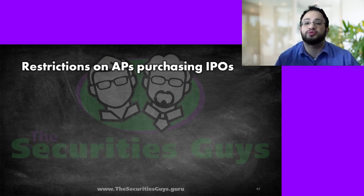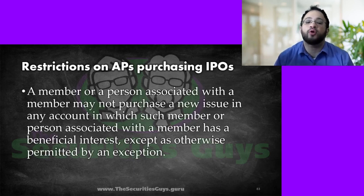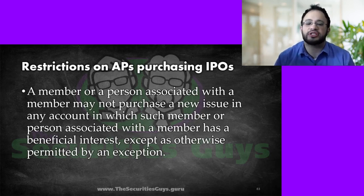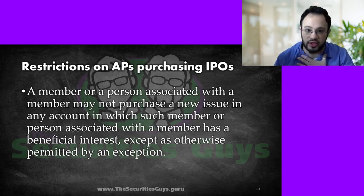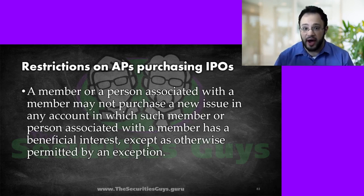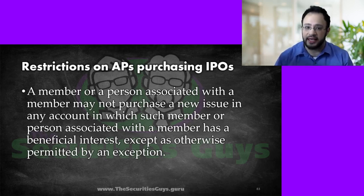Regarding restrictions on associated persons purchasing IPOs: a member or a person associated with a member — these are basically full broker-dealers and series-seven broker-dealers — may not purchase a new issue in any account in which such member or associated person has a beneficial interest. If I were in a joint account with multiple people sharing ownership, that account would not be able to buy an IPO because I'm involved and have a beneficial interest — some ownership stake in that pooled account.